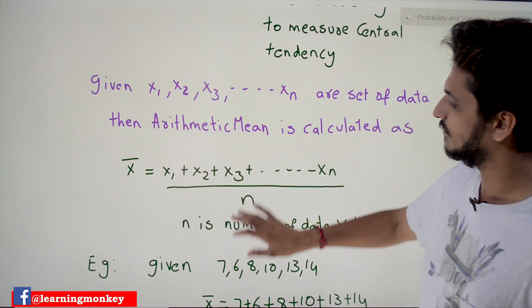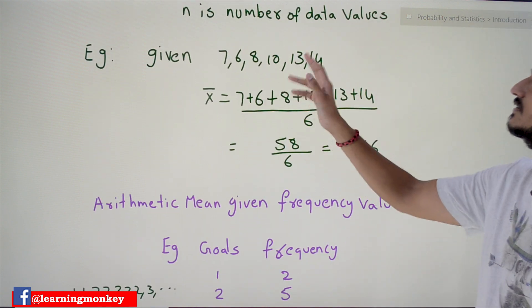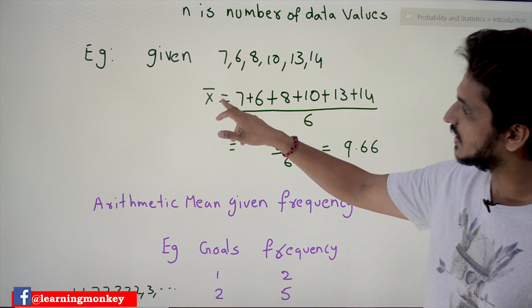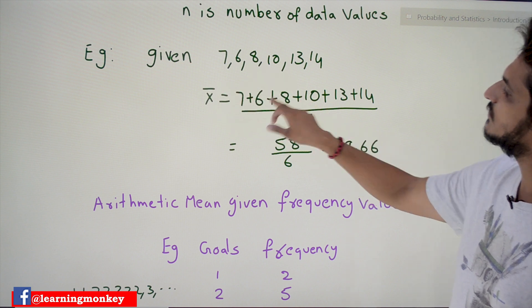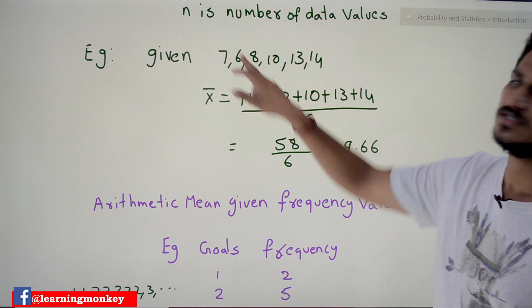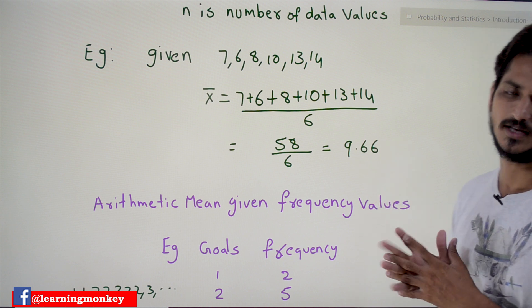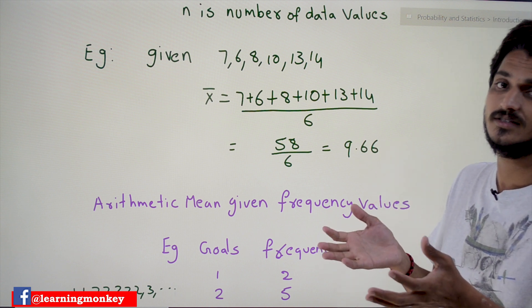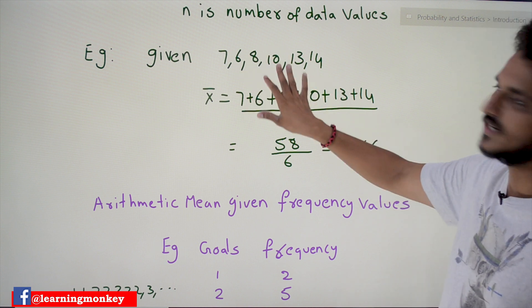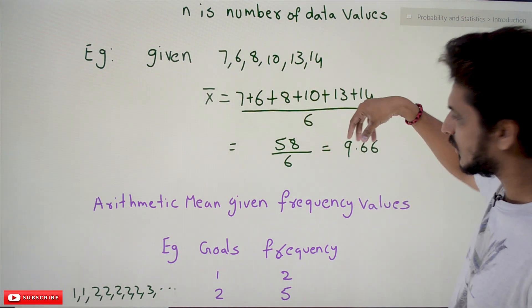Let's take an example. Given the data: 7, 6, 8, 10, 13, 14 — to calculate the arithmetic mean, x̄ = (7 + 6 + 8 + 10 + 13 + 14) / 6 = 9.66. So the measure of central tendency is 9.66, which is the center value — some values fall on the left and some on the right.